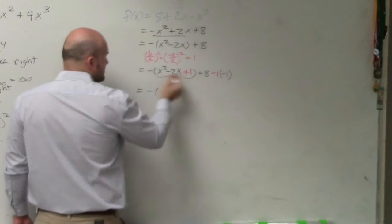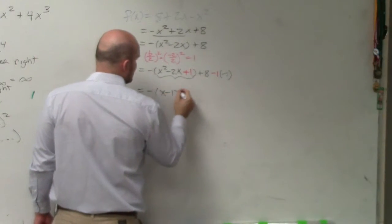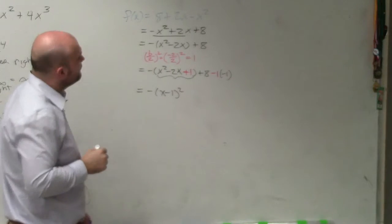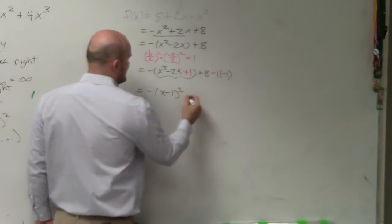So the binomial squared here is x minus 1 times x minus 1, which is x minus 1 squared. Negative 1 times negative 1 is positive 1 plus 8 is 9.